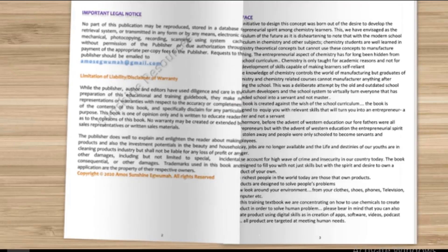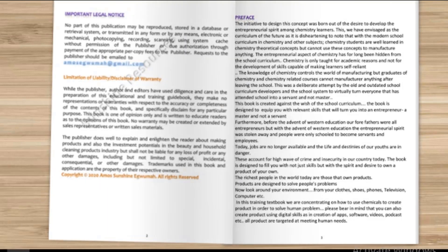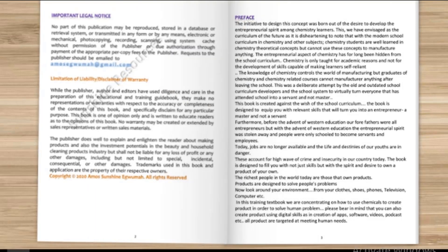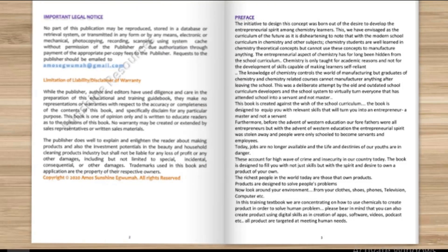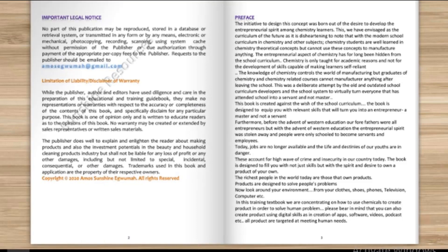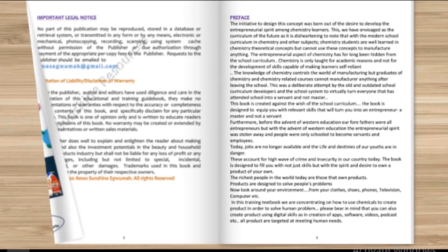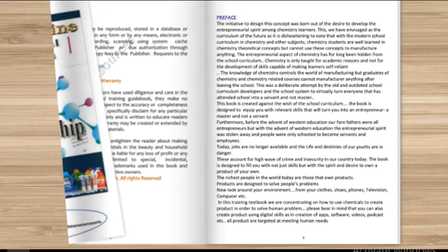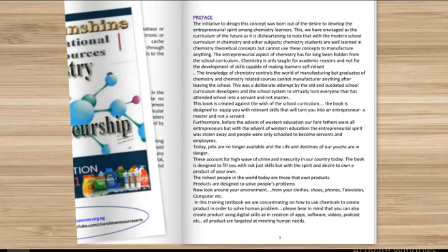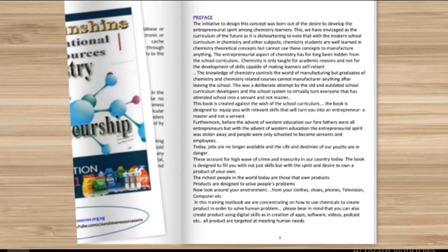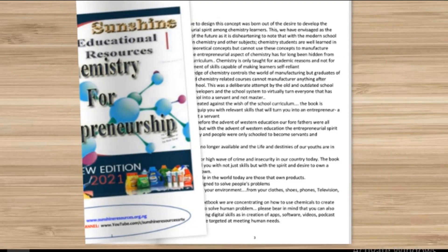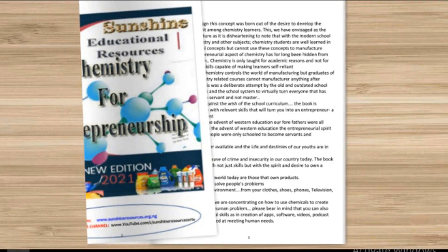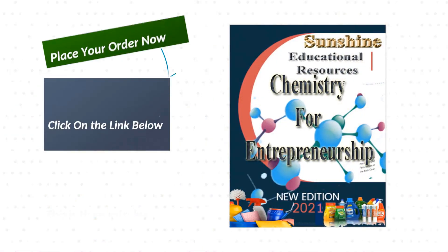On page 212 in the ebook, we include a full business proposal of how to start cocoa powder production and processing, including the machinery, if you want to go into full-scale commercial production. And on page 264, we include addresses, phone numbers, and location of soap chemical merchants, only in Nigeria.